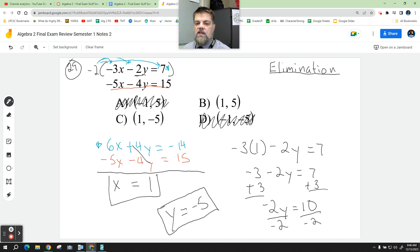Okay? So that means my solution should be x comma y or 1 comma negative 5. That's C. Now how do I double check that? Desmos.